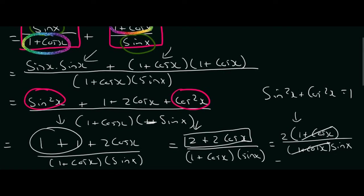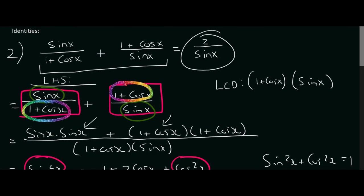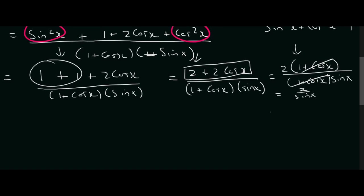Those cancel and we are going to be left with 2 over sin x, which I think is what we were trying to find. Yes that's what we were trying to find. So what we do then is we say therefore left-hand side is equal to right-hand side.